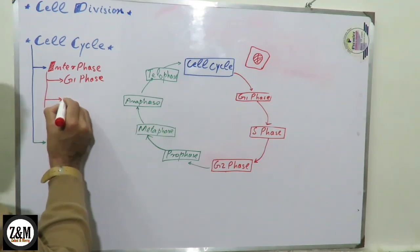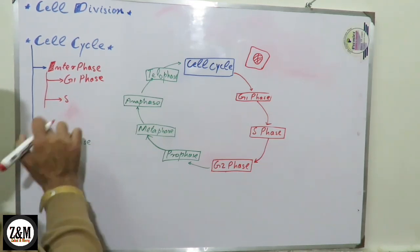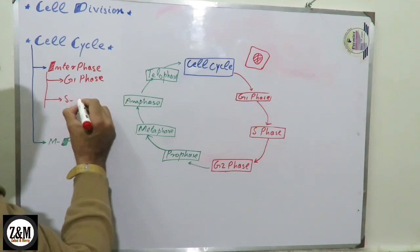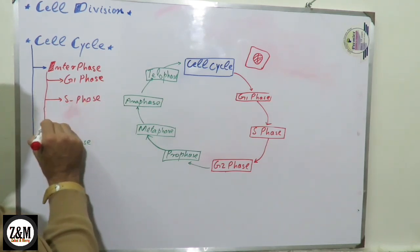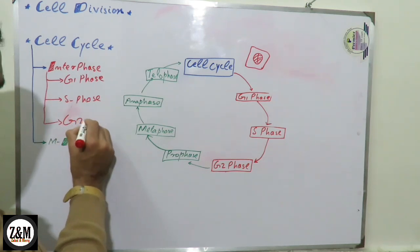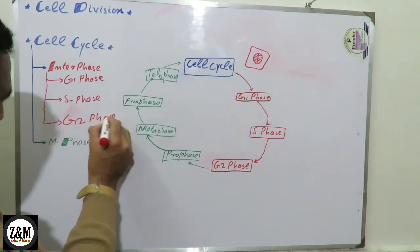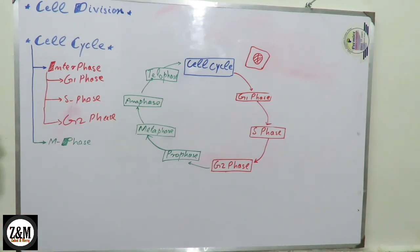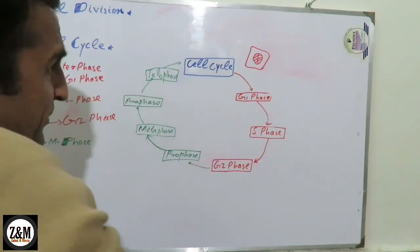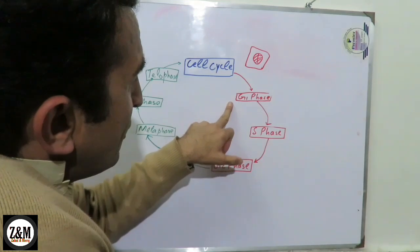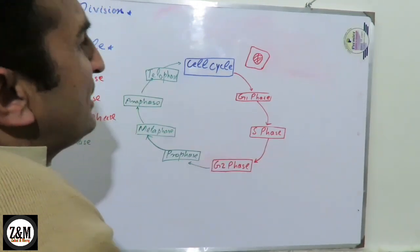The phases of interphase are: G1 phase, S phase, and G2 phase.